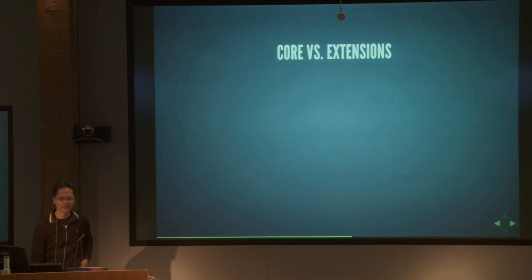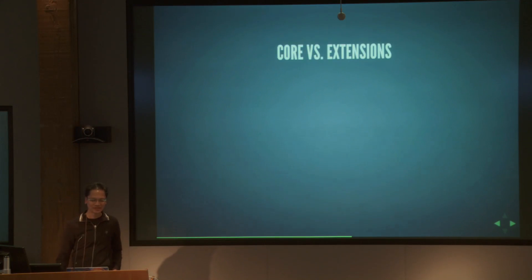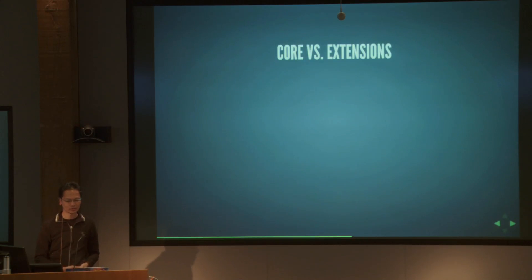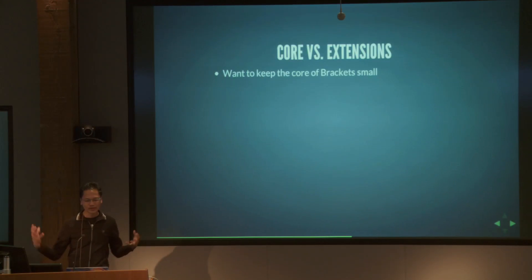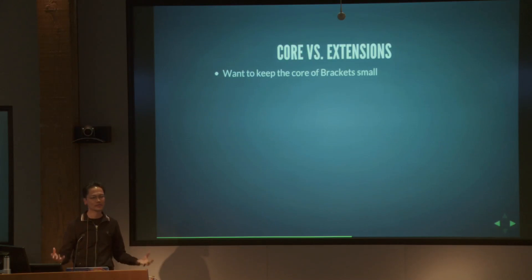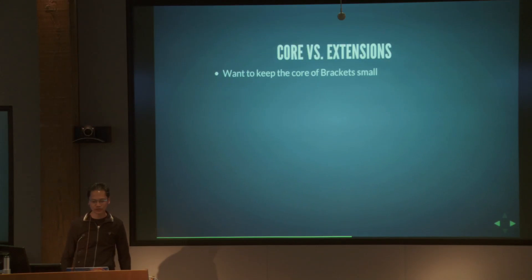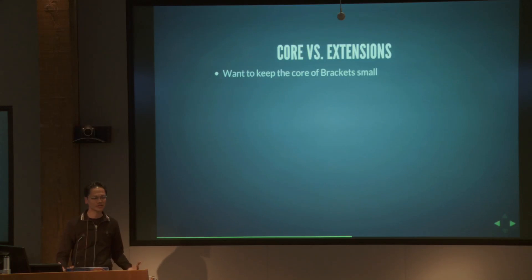Talking about core versus extensions — one of the things that's hard is diving into a big existing codebase. It's a lot easier to start by making a small extension. A lot of the functionality you might want, like little editor conveniences, should be easily implementable as extensions. One of our philosophies is to keep the core of Brackets small — it should just have stuff commonly needed by extensions, with most functionality implemented as extensions. We're still early in thinking about how extensions should work, and it's a very simple mechanism right now with not a lot of specific extension APIs.